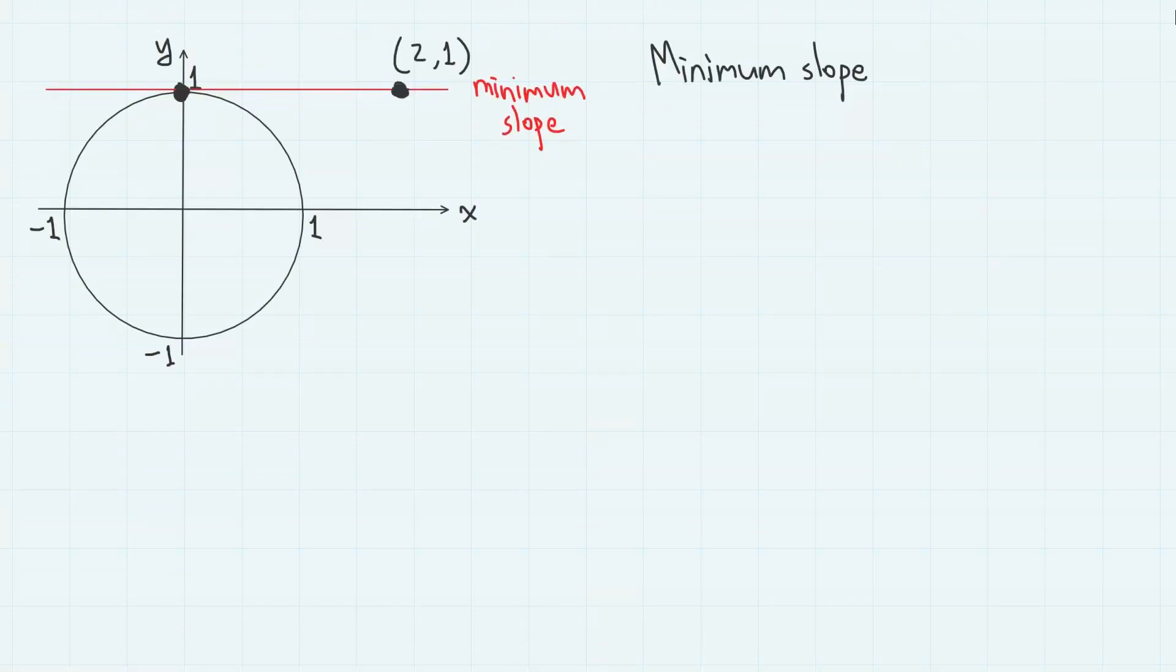Here, the minimum value of the slope is kind of obvious. The slope has a minimum value of 0 when the point on a unit circle is 0 comma 1.